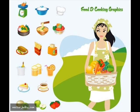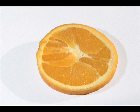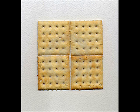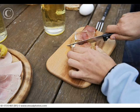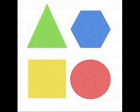Many of the foods we eat each day are in shapes like circles, squares, or triangles. What we don't realize is when we cut our food, we're dividing our food, which is dividing the shapes.